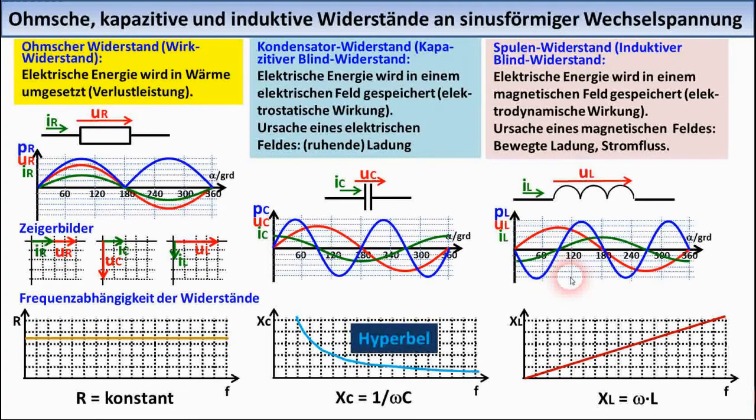With the capacitor, the resistance becomes smaller with increasing frequency, with the coil larger. You can see that here in this function graph.